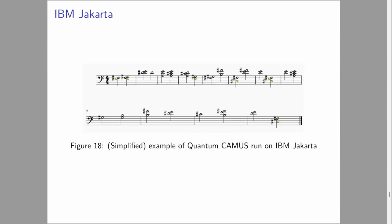Here's an example that was run on IBM Jakarta. It's a simplified example. IBM Jakarta has seven qubits available, not 36. So we skipped out some of the temporal morphology. We've stripped out the things to do with instrumentation, but this is just an example of the CAMU system built on a quantum cellular automaton run on actual physical quantum hardware.